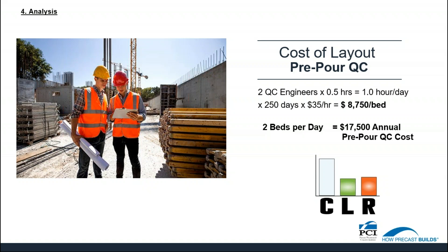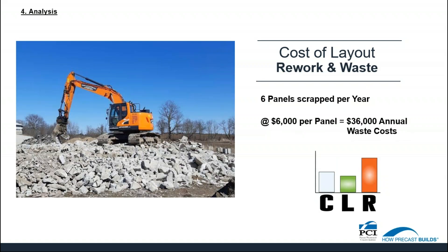We saw the cost of labor and the cost of pre-pour QC — let's look at rework. In this example, the rework amount was six panels per year. Six panels per year scrapped at $6,000 per panel equals $36,000 in annual rework and wastage costs. This is the specific case for this producer, but as you look at your operations, the cost will change and could range from $5,000 to over $60,000 in some cases, where reducing rework can make or break a situation.